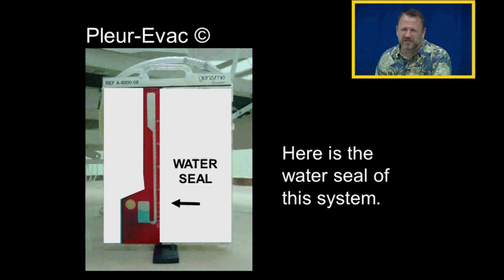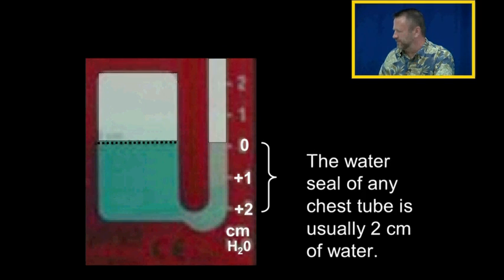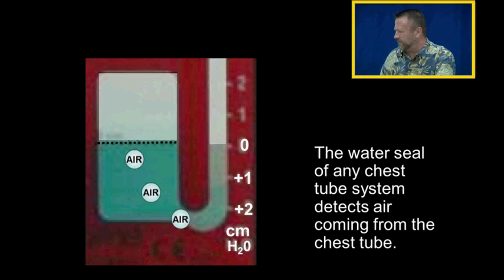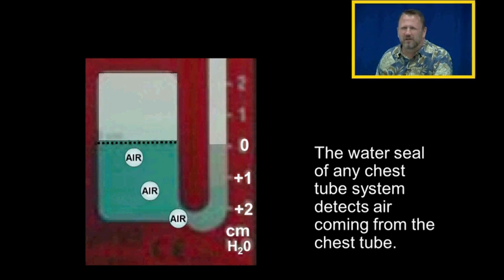Here's the water seal of this system. The water seal of any chest tube system is usually two centimeters of water. The water seal of any chest tube system will detect air coming from the chest tube.